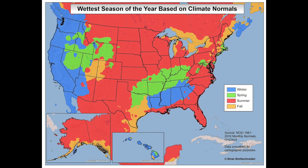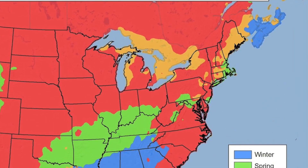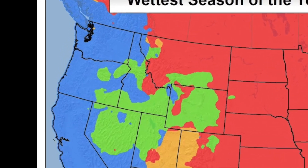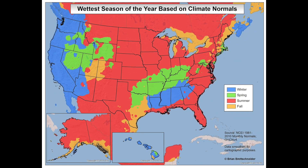This map shows us the wettest seasons of the year based on averages between 1981 and 2010. Surprisingly, it looks like for the majority of the country, the wettest time of year is summer. New England has a lot of their wettest part of the season in fall, as well as the Great Lakes region. The Pacific Coast is all winter, except for a few tiny dots of fall. Spring accumulations seem to gather around the Mountain West region, as well as along the Upper South.